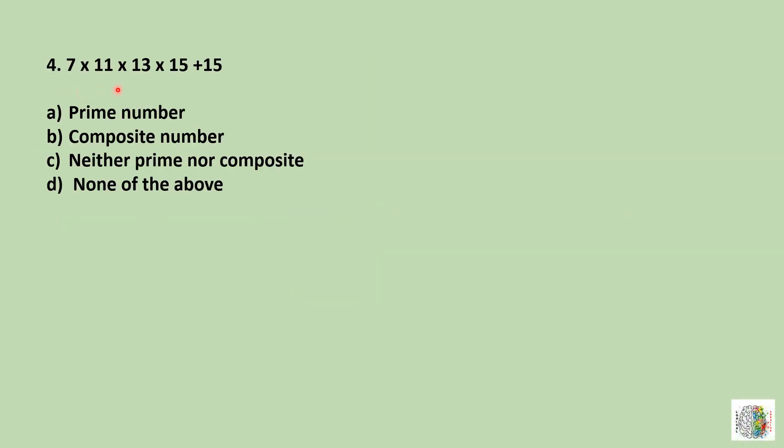Question number four: 7 times 11 times 13 times 15 plus 15. If we solve this, is it a prime number, composite number, neither prime nor composite, or none of the above? If we multiply this and then add 15, it's very time consuming. So I will show you two shortcut tricks.